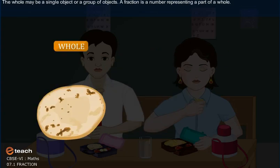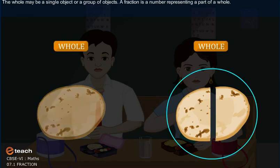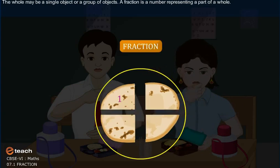The whole may be a single object or a group of objects. A fraction is a number representing a part of a whole.